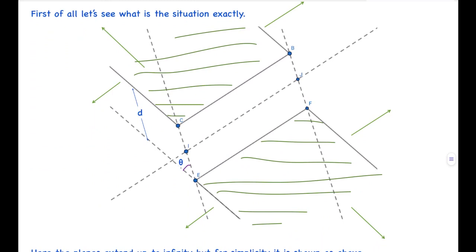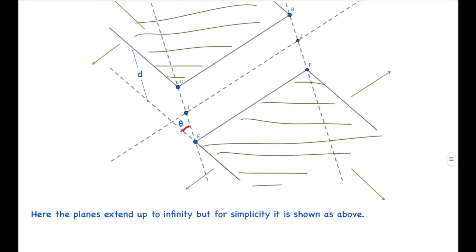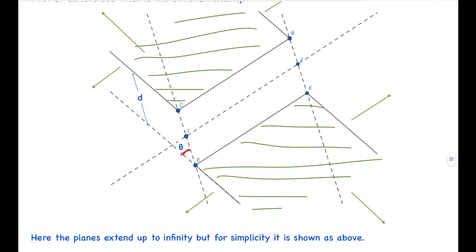First of all, let's see what the setup is exactly. Here you can see this is one of the planes and this is the other plane, and these two are extending to infinity as shown by the green arrows in all directions. The plane involving their two borders — these two are the borders — is at an angle of theta with them, and they have a distance of d between them. The planes extend up to infinity but for simplicity are shown as above.